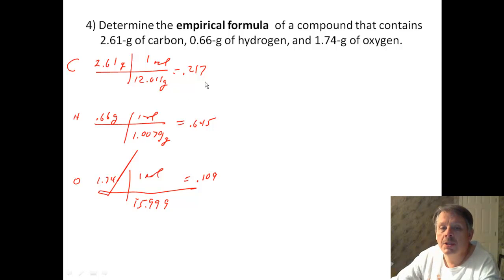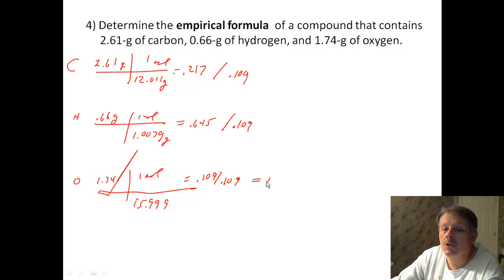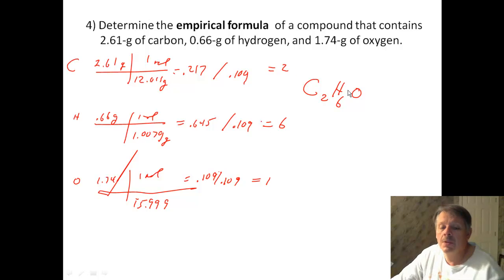Again, I can spot that the 217 to the 109 is a 2 to 1 ratio. But let's go and divide them all, because I don't know what 0.645 is. I divide by 0.109. The bottom one clearly gives me 1. The top one clearly gives me 2. And this one actually gives me 6. So my ratio is C2H6O. And that is my empirical formula.